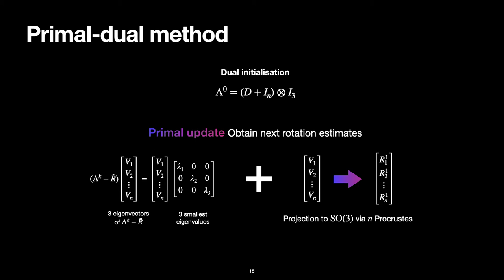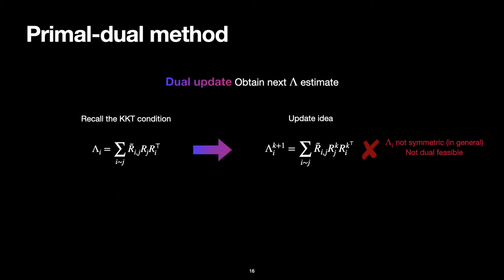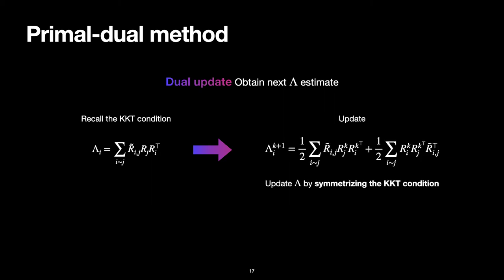To go one step further, we take this set of rotations and compute a better estimate for the dual variable. Recall the KKT condition, however, we cannot use this explicit dual update rule because λ needs to be symmetric. This sum of rotations will not produce a symmetric matrix unless we have attained a stationary point. So we simply take the symmetric part of this formula, which constitutes our dual update rule.